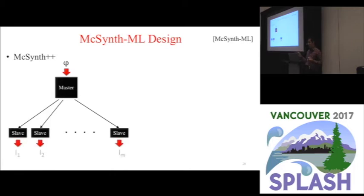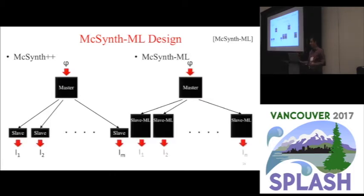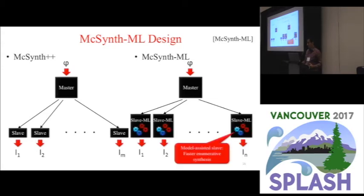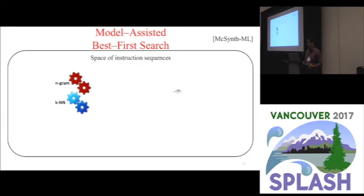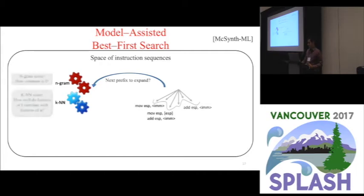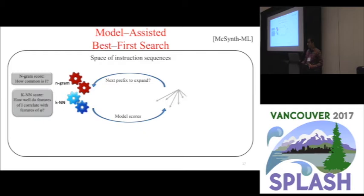Otherwise, the design of McSynthML is similar to that of McSynth++. It employs the same master-slave architecture, and assisted by our models though, our linear search becomes a best first search. So, how do we use these models during synthesis? Suppose the current candidate set of prefixes looks like that. The search uses an interpolation of the two models to choose which prefix to expand. Now, a desideratum of our design is that we don't want to simply learn the sub-optimal code we might happen to see in some training corpus. So, our design constraint here is that we maintain the same completeness guarantee of McSynth++. Since our models don't prune away instruction sequences but merely reprioritize them, we're going to maintain the same completeness property.